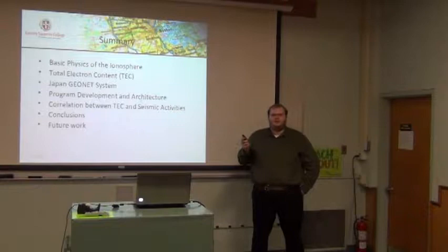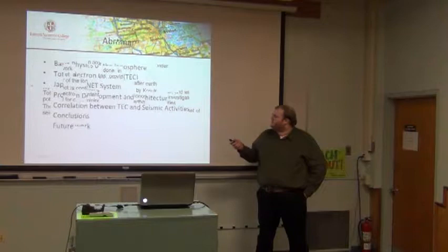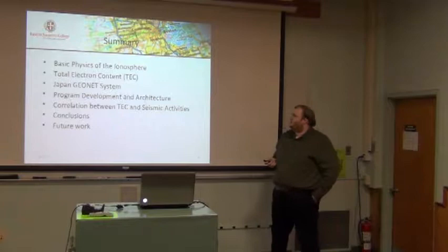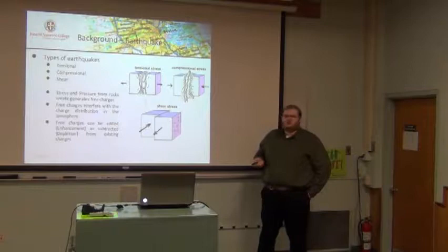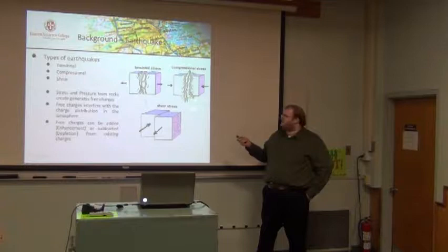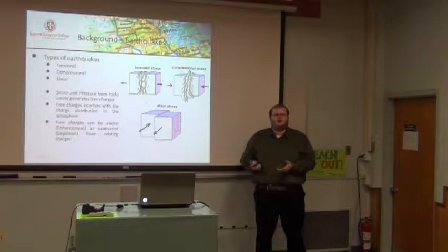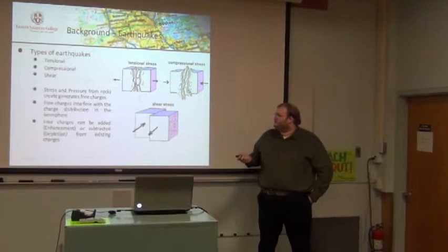So what I'd like to talk about today is the basic physics of the ionosphere, Total Electron Content, and also I'd like to talk about the Japan Geonet System, the program I developed, and also the correlation between TEC and seismic activity and cross-way TEC later. So the earthquakes are just the deformation of the crust of Earth. You can see that happens in multiple ways. You can have tensional stress, compressional stress, and also shear stress. These all create an electric field which change the atmosphere, which is just electrons. So they make change to the ionosphere, which is the simulation I'm showing you.